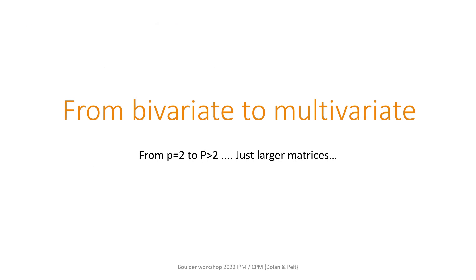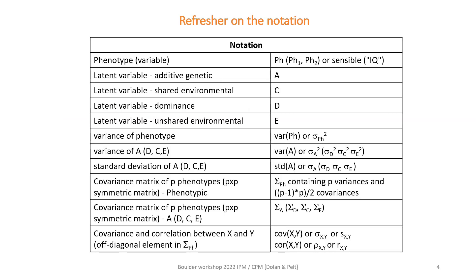It doesn't amount to much, really, if you have the bivariate model clear in your head. This just increases the scale from p=2, the bivariate model, to p greater than 2 — and that's it. The example we consider is where p is equal to 4, so that is a four-variate problem. This slide will look familiar — it's just the overview of our notation as we use them in these five lectures.